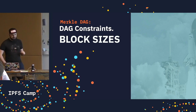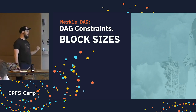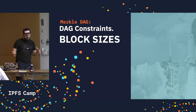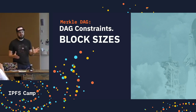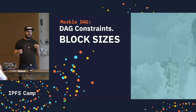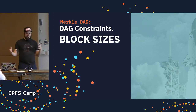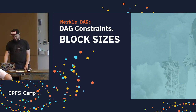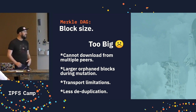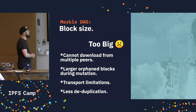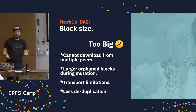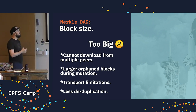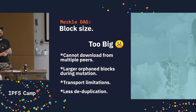Block sizes — they're like the three bears: too hot, too cold, just right. Blocks can be too big, and when you start making blocks bigger and bigger, you get a set of different problems. One big one is that you can't download a single block from multiple peers.